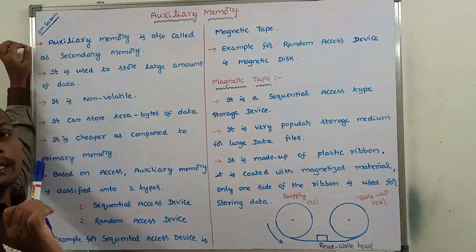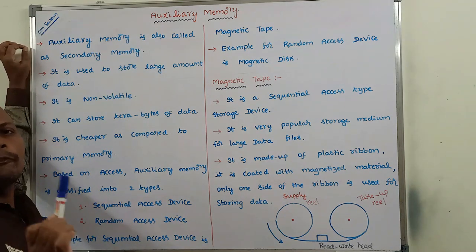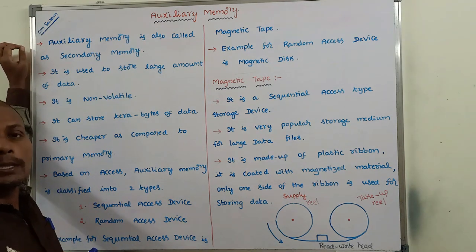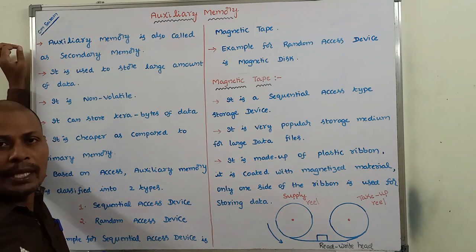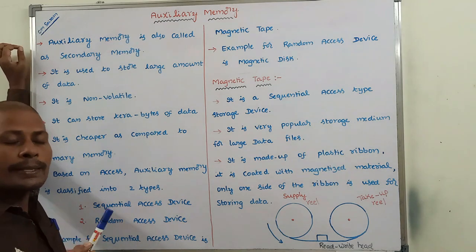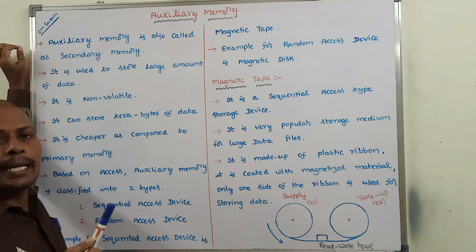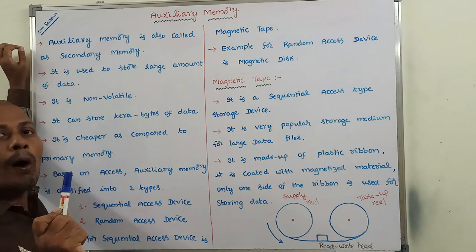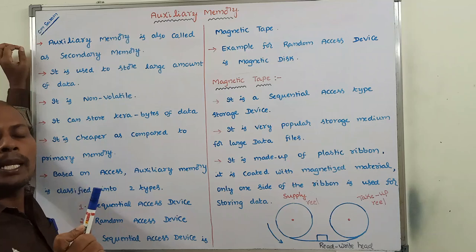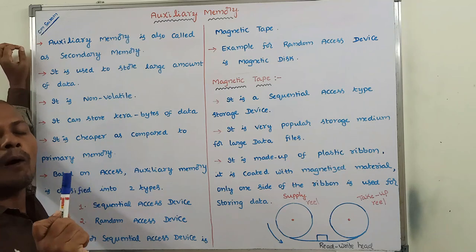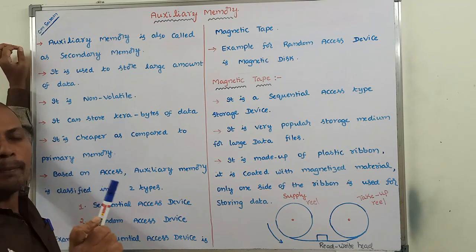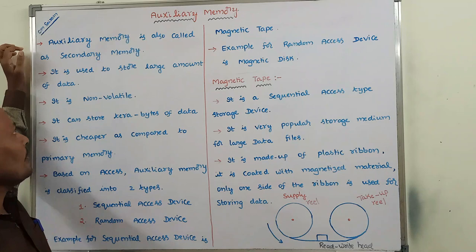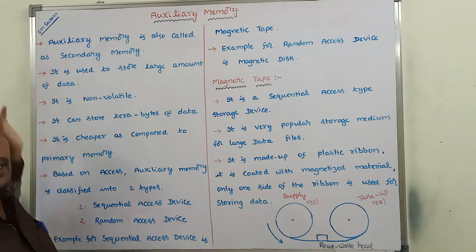Another name for auxiliary memory is secondary memory. Hence, we can say that auxiliary memory can also be called as secondary memory.